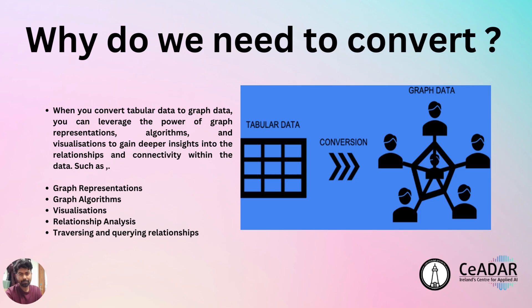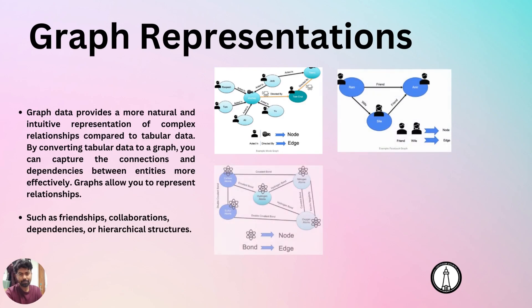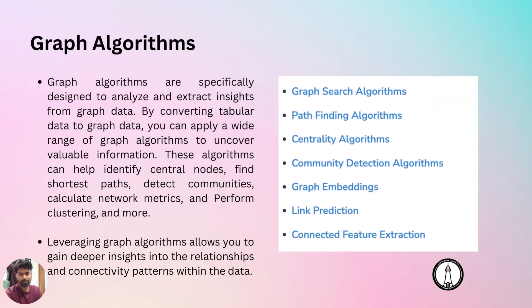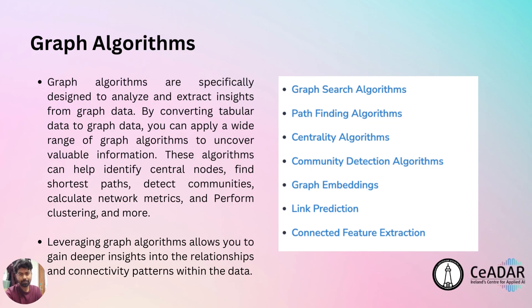Let's discuss graph representations, graph algorithms, visualizations, relationship analysis, and traversing and querying relationships. Graph data provides a more natural and intuitive representation of complex relationships compared to tabular data. By converting tabular data to graph data, you can capture connections and dependencies between entities more effectively. Graphs allow you to represent relationships such as friendships, collaborations, dependencies, or hierarchical structures.